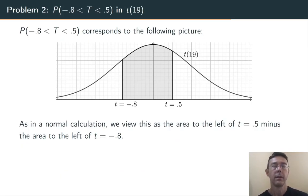Problem two. Find the probability that t is between negative 0.8 and 0.5 in the t-distribution with 19 degrees of freedom. So here's a rough sketch. We want to get this shaded area when the total area under that curve is 1.